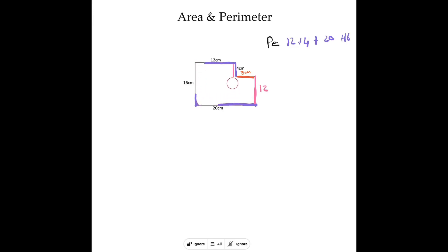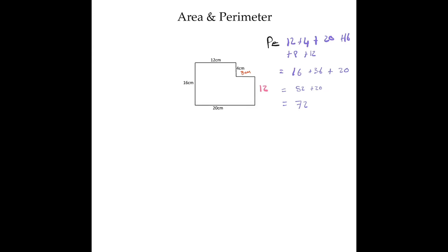For the last missing piece, it's going to be equal to 16 minus 4, which gives us that length. 16 minus 4 equals 12, so now I have both missing values. Adding everything together for the perimeter: 12 plus 4 plus 20 plus 16 plus 8 plus 12. That gives us: 12 plus 4 is 16, 20 plus 16 is 36, and 8 plus 12 is 20. Then 16 plus 36 is 52, plus 20 is 72. Please double-check my calculations — but the perimeter is 72 centimeters.